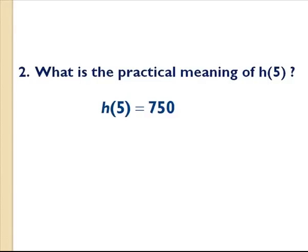But h(5) equals 750 doesn't really tell me too much information about this problem. Typically your professor will probably ask you to define the meaning of h(5). What does this actually mean? It's not just numbers and letters written on the screen. There's some meaning here. What is that meaning?